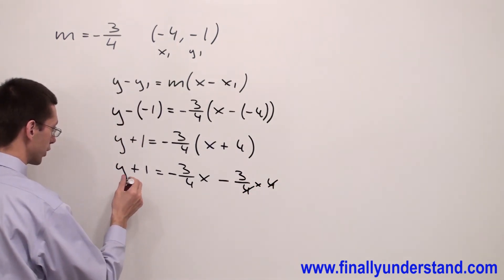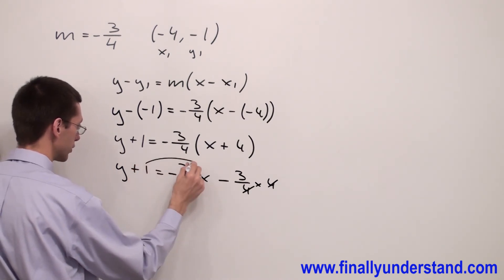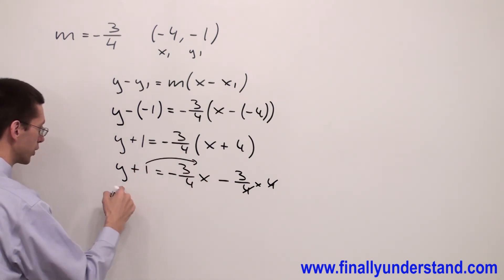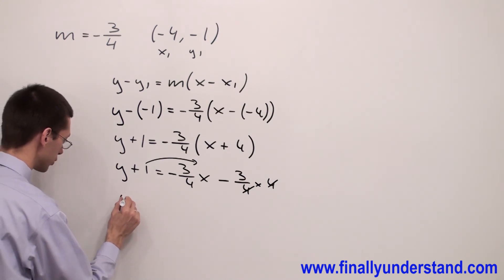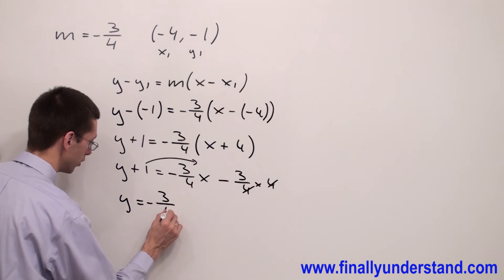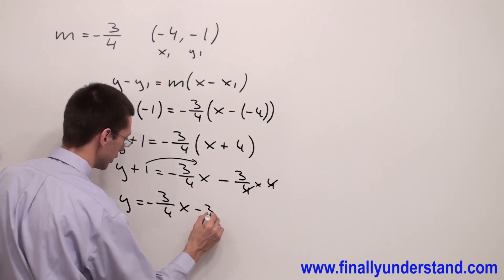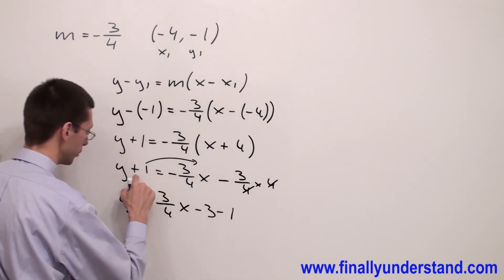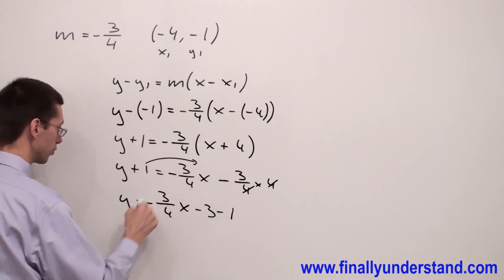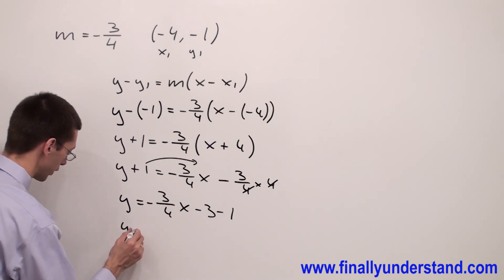And what we have to do next, we have to move positive 1 to the right side because we're supposed to solve this equation for y. So y is equal to negative 3 over 4x minus 3 minus 1 because we moved this one to the right side of the equal sign.